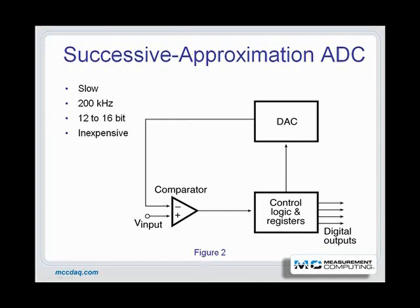The comparator then compares the analog output of the DAC to the input signal. If the DAC output is lower than the input signal — that is, the signal is greater than one half full scale — the most significant bit, or MSB, remains set at 1. If the DAC output is higher than the input signal, the MSB resets to zero.